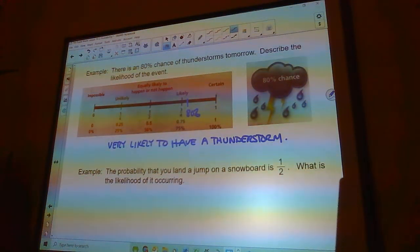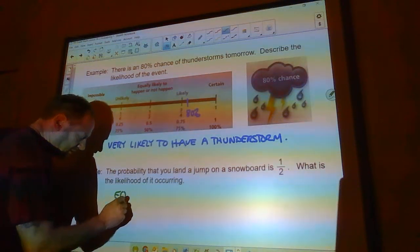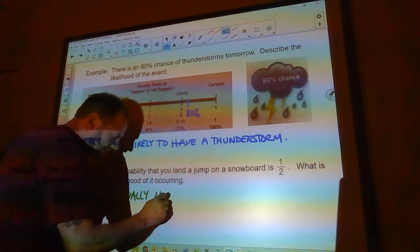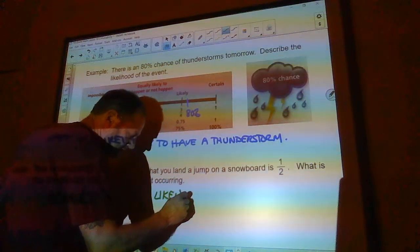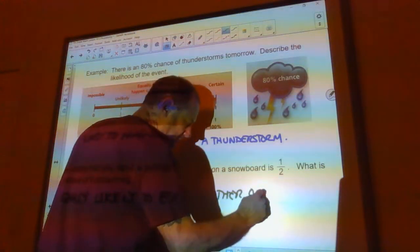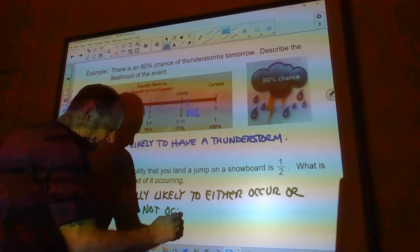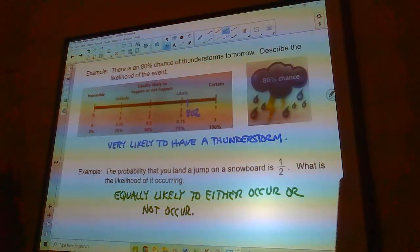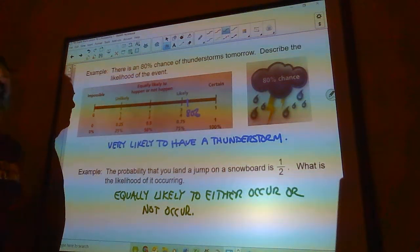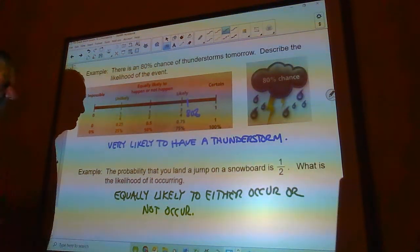The probability that you land a jump on a snowboard is 1.5%. What is the likelihood of it occurring? Well, 1.5% that would be right here. I think most people understand that. If the probability is a half, that's 50%. It's going to happen once, it's going to not happen once. It's a toss-up. You can't really predict.